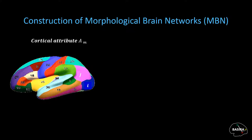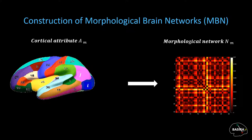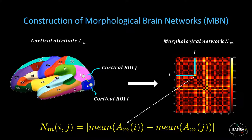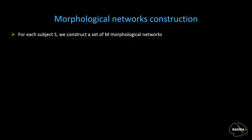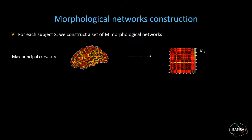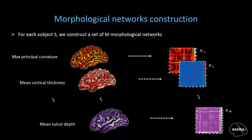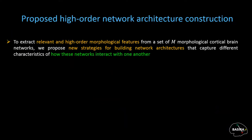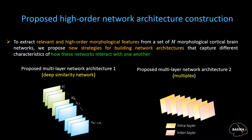We first parcellate each cortical hemisphere into different cortical regions using an atlas. The weight of a connection between two cortical regions I and J in the network is computed as the absolute difference between the mean of cortical attribute M in region I and its mean in region J. For each subject, we construct a set of M morphological networks — for example, max principal curvature, mean cortical thickness, and mean sulcal depth. We propose new strategies for building network architectures that capture different characteristics of how these networks interact: the deep similarity network and the multiplex network.